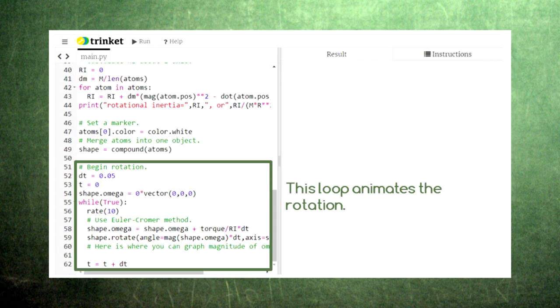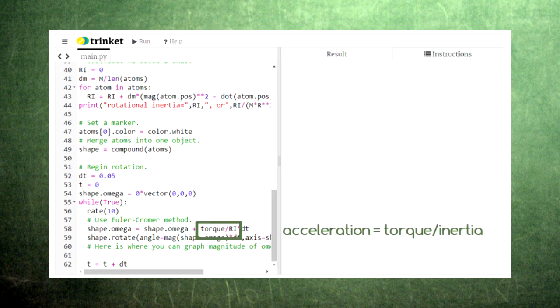Finally, in the animation loop, we use the same update equation as before, replacing the rotational acceleration with the torque divided by the rotational inertia.